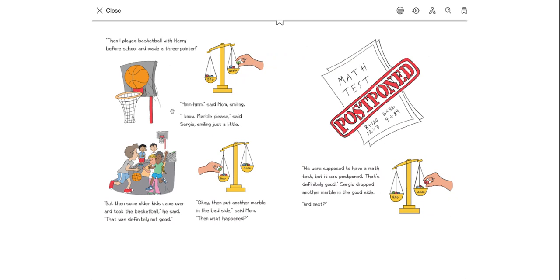Then I played basketball with Henry before school, it made three-pointer. Mm-hmm, said mom, smiling. I know. Marble, please, said Sergio, smiling just a little. But then some older kids came over and took the basketball, he said. That was definitely not good. Okay, then put another marble on the bad side, said mom. Then what happened? We were supposed to have a math test, but it was postponed. That's definitely good, said Sergio dropped another marble on the good side.